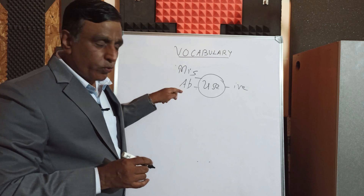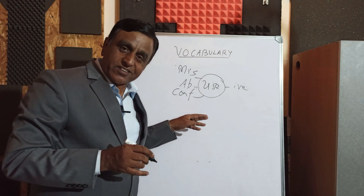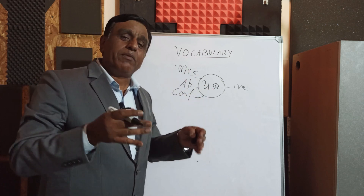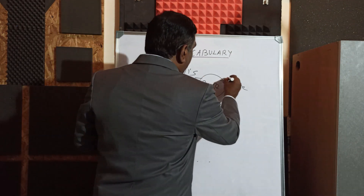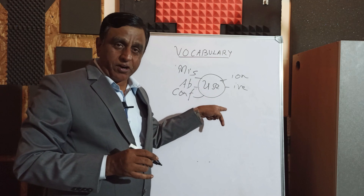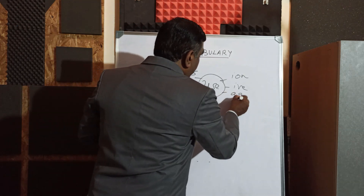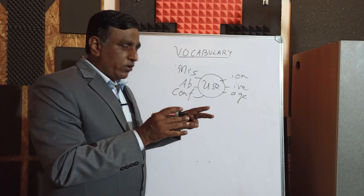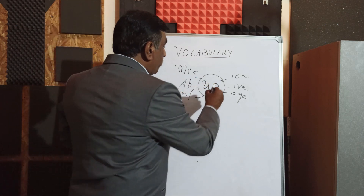Now if I can't do those two, I can straight away confuse — confuse kar sakta hoon mein, iske liye koi punishment nahin hai. Misuse ke liye punishment hai, abuse ke liye punishment hai, lekin confusion ke liye koi punishment nahin. I can say confuse, then add I-O-N thereby making the word 'confusion' — of course the 'e' drops off. So I can say 'usage' — the 'e' will go off when you combine these two. I can say 'user', 'used', and 'using'.